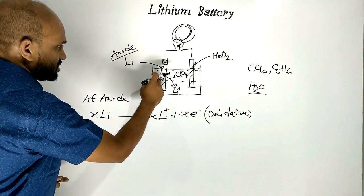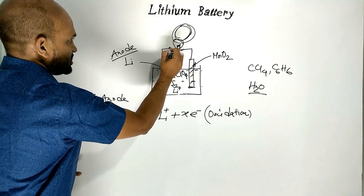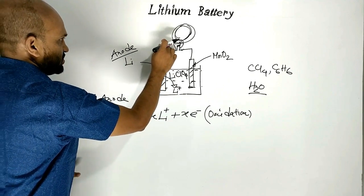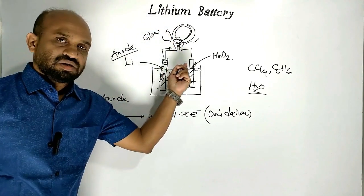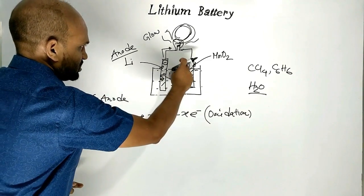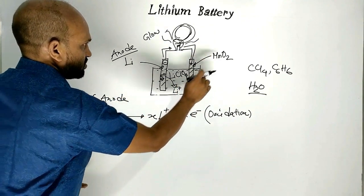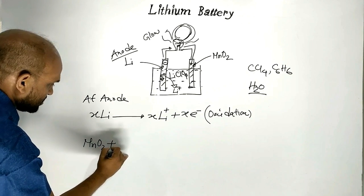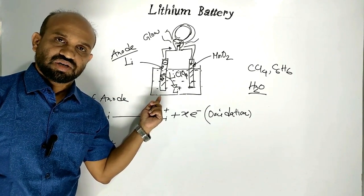Because of electron repulsion, electrons move through the wire. At one stage, electrons cross the filament and at that time the bulb will glow — chemical energy is converting to electrical energy. On the other side, these electrons come to the manganese oxide electrode, which receives those electrons coming from the lithium anode.